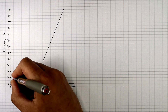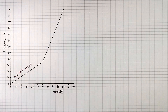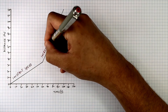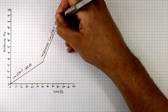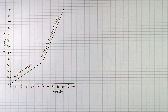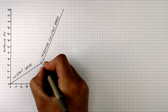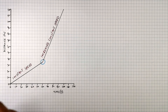The first part of the graph shows a constant speed. The second part of the graph shows an increased constant speed, as there is a steeper gradient of the line. This part of the graph shows an instant acceleration from a lower speed to a higher speed.